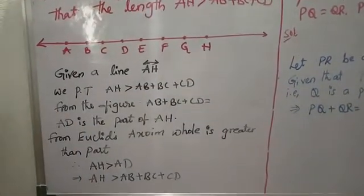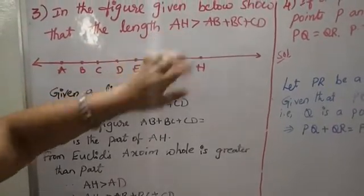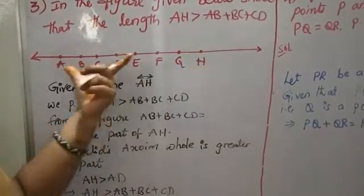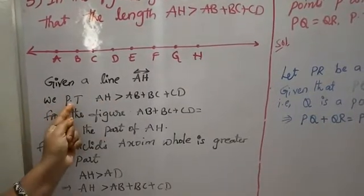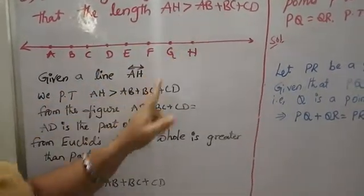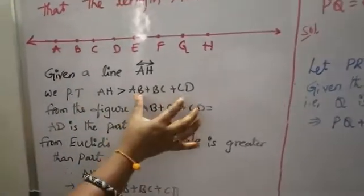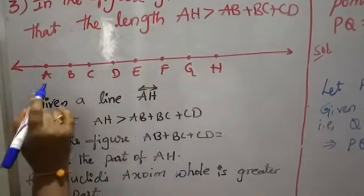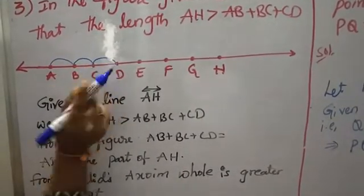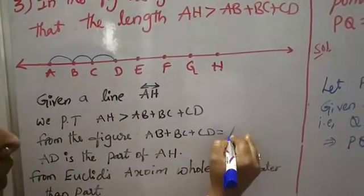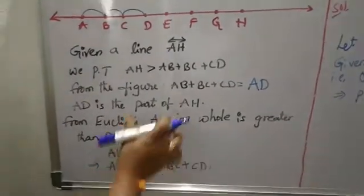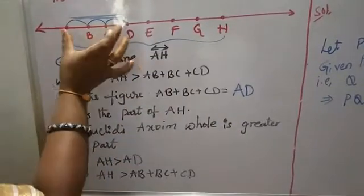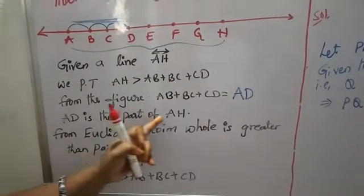We can make many straight lines from this line. Let it be that AH is greater than AB plus BC plus CD. Given line is AH — the total line. We have to prove AH is greater than AB plus BC plus CD. From the figure, AB plus BC plus CD can be written together as AD. So AB plus BC plus CD equals AD. Now AD is a part of the total AH.